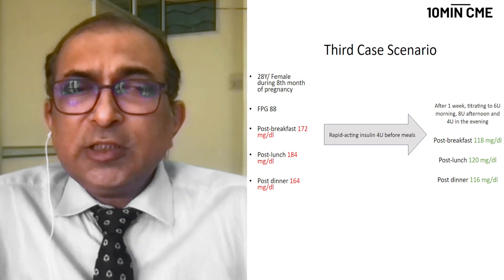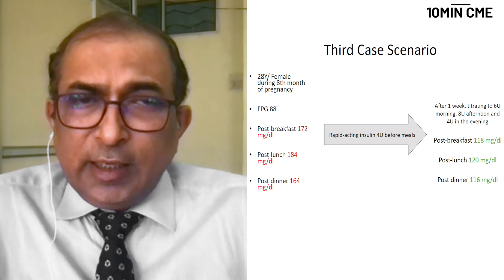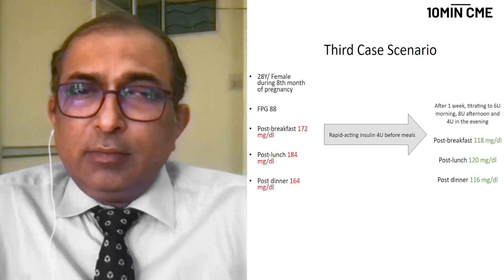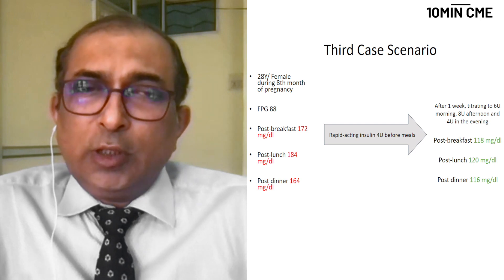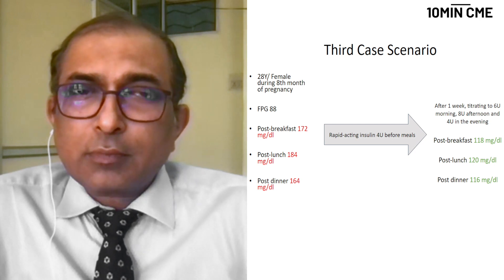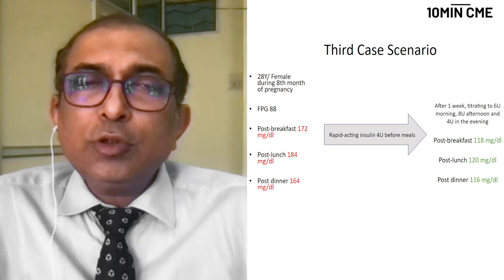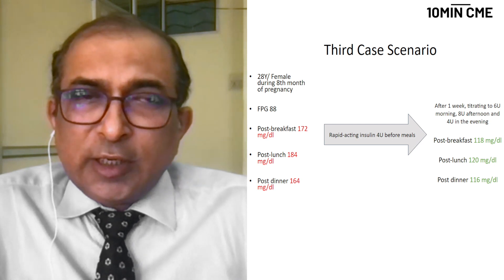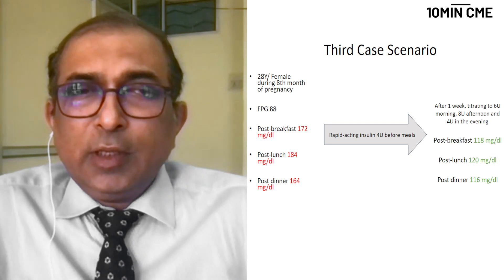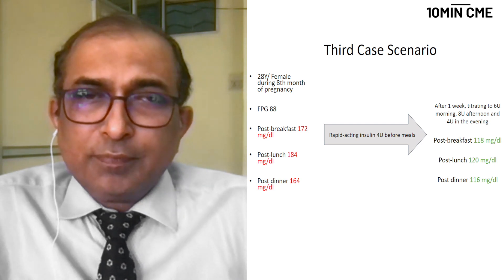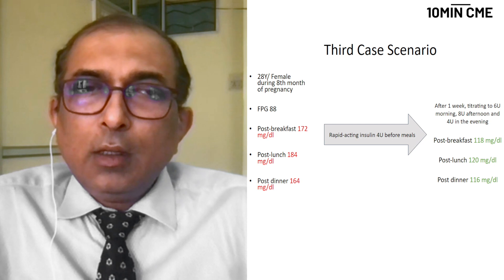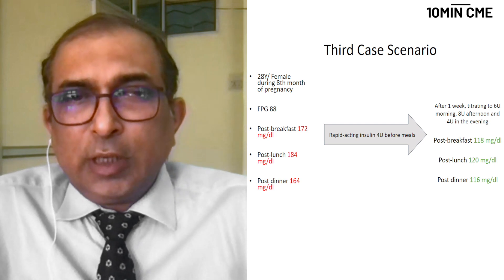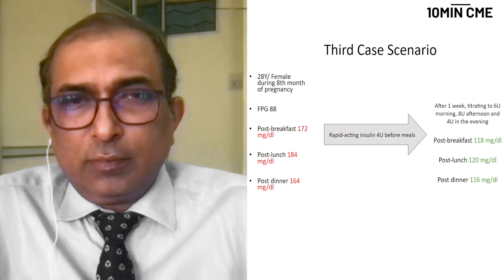After titration to 4 units in the evening, after one week her fasting glucose was 89, post-breakfast value was 118, post-lunch was 120, and post-dinner value was 116. This showed that in this patient, we just needed post-prandial coverage with a rapid-acting analogue.